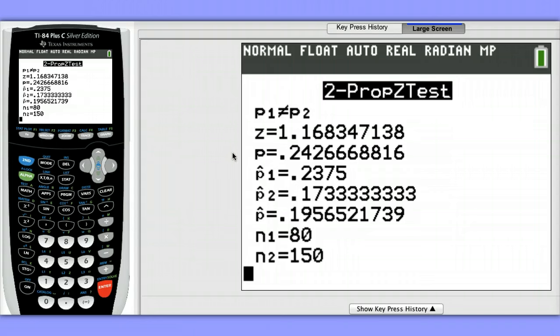Our p-value of 0.242, or about 0.243, tells us that we would fail to reject the null hypothesis. This is not sufficient evidence to say that there's a difference in the population proportions for the two schools.